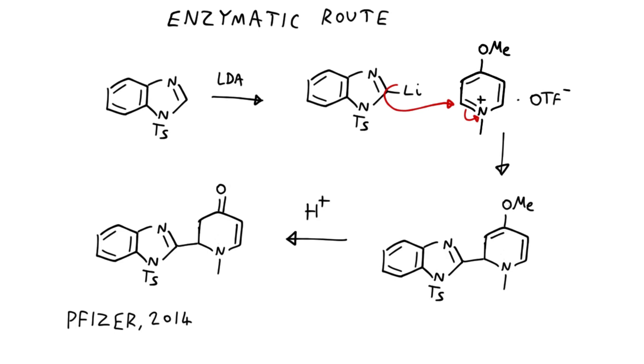The product is this enol ether, and by simply treating the enol ether with acid, they are able to decompose that to the alpha-beta-unsaturated ketone. So you can see they're going from an aromatic building block to afford eventually a fully saturated core. That's an interesting and different way of doing it.